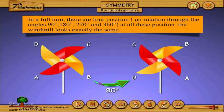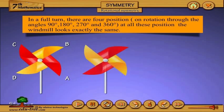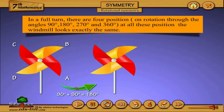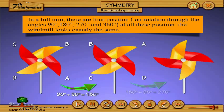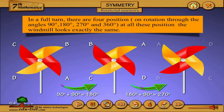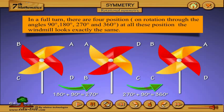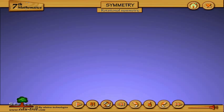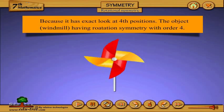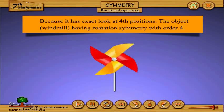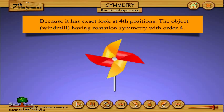In a full turn, there are four positions of rotation through the angles 90 degrees, 180 degrees, 270 degrees, and 360 degrees. At all these positions, the windmill looks exactly the same, because it has the exact same look at all four positions.